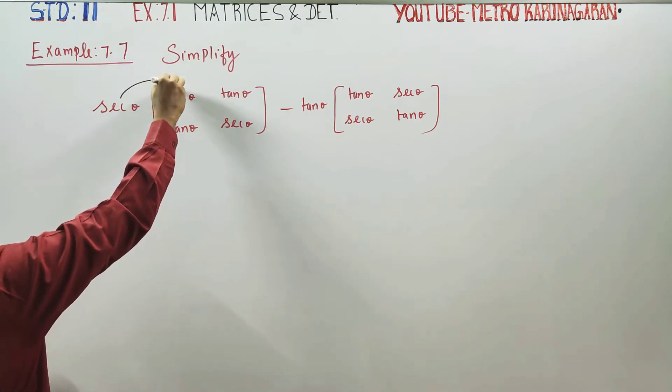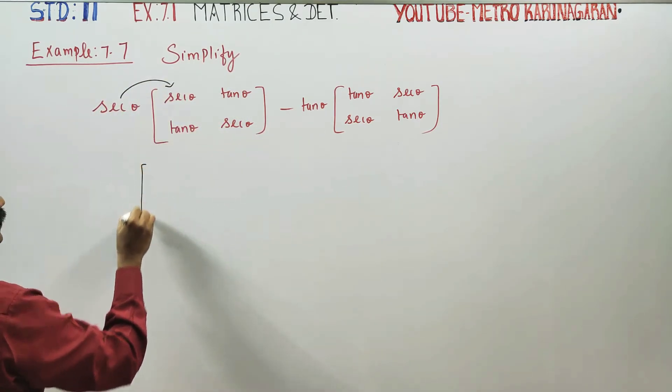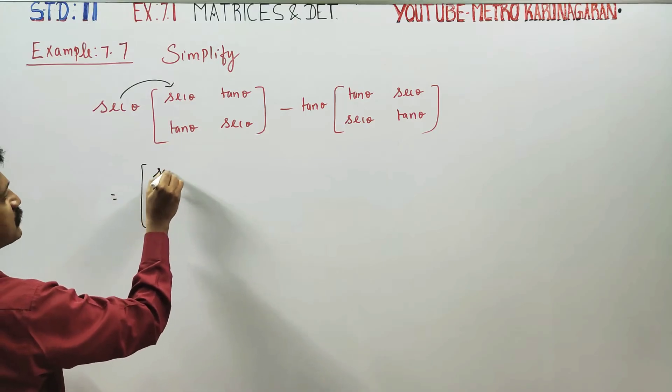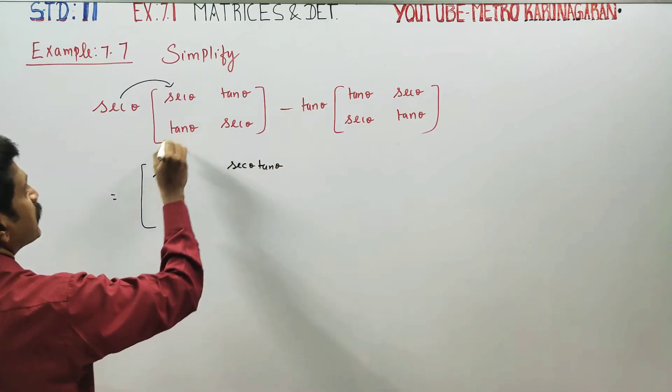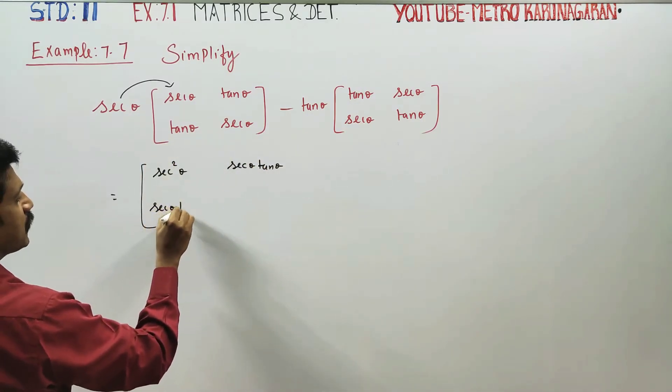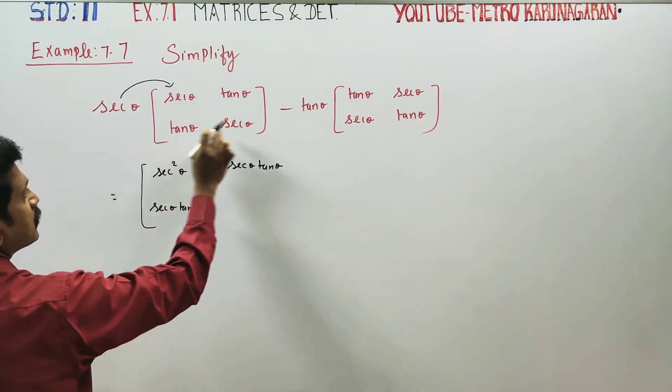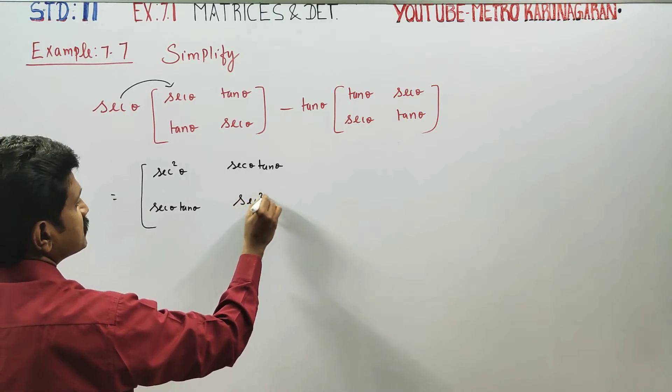When you multiply, you will be getting secant squared theta here, and secant theta tan theta here. Then secant theta tan theta here as well, and again you will be getting secant squared theta.